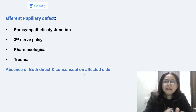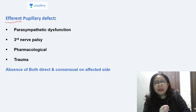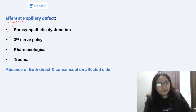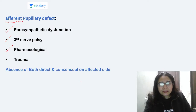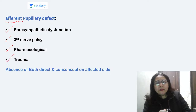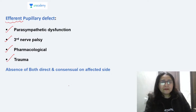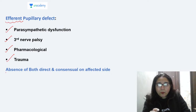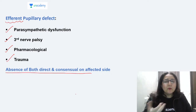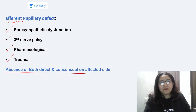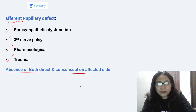If there is a defect in the efferent limb — the motor limb — it can be at the level of the parasympathetic nucleus in the midbrain, due to third nerve palsy, parasympathetic drugs, or trauma to the iris sphincter muscle. In efferent pupillary defect, both the direct and consensual reflexes will be absent in that eye, because it is the motor component that is defective.